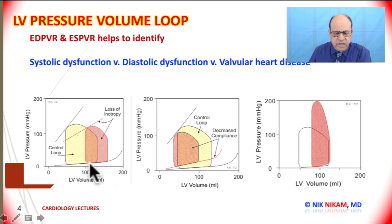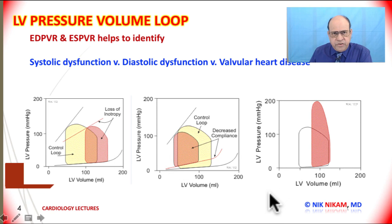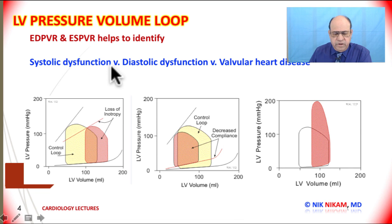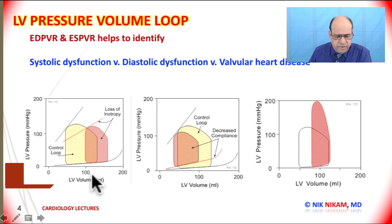Here is a little quiz for you. We have three different loops — the control loops and the altered loops. It is your job to find out which one represents systolic dysfunction, which represents diastolic dysfunction, and which represents valvular heart disease. Take a couple of minutes, analyze this, and when you are ready you can continue with the video.